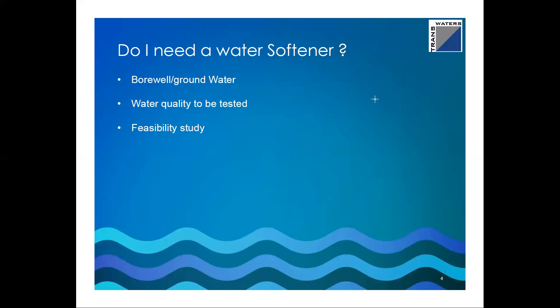Feasibility is the other consideration: a water softener requires pressurized water flow, so it may need an extra pump. In most houses, bore well water is filled into a sump and then pumped to an overhead tank. In such cases, we reuse the existing pump and fit the softener in between to fill the overhead tank with soft water. In some places where water is pumped directly to the overhead tank, a small additional pump and an extra tank may be needed. These three parameters — water quality, volume, and plumbing feasibility — are what we assess during softener installation.